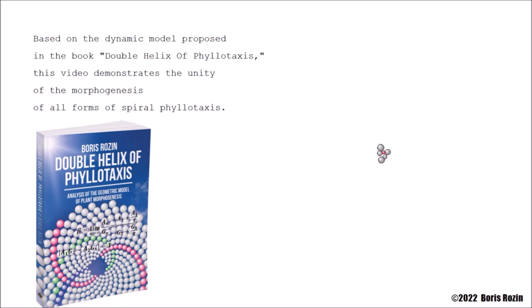Based on the dynamic model proposed in the book Double Helix of Phyllotaxis, this video demonstrates the unity of the morphogenesis of all forms of spiral phyllotaxis.